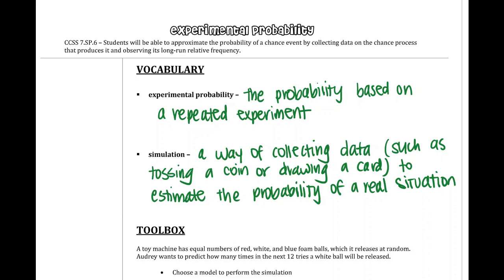Experimental probability. Experimental probability is the probability based on a repeated experiment, and we can estimate the experimental probability using a simulation, which is a way of collecting data, such as tossing a coin or drawing a card, to represent a real situation.